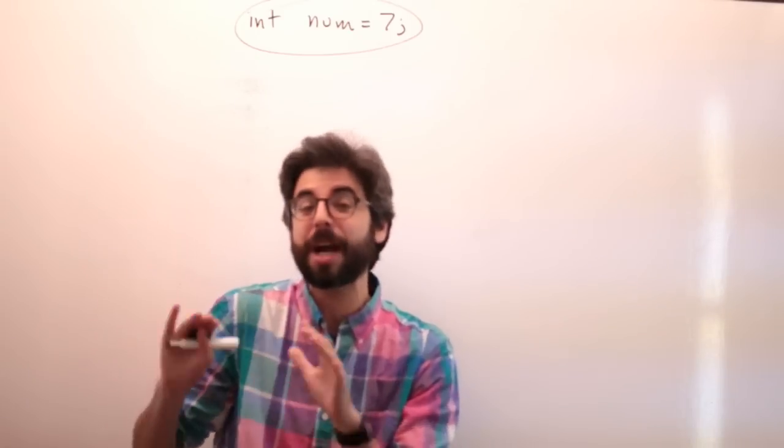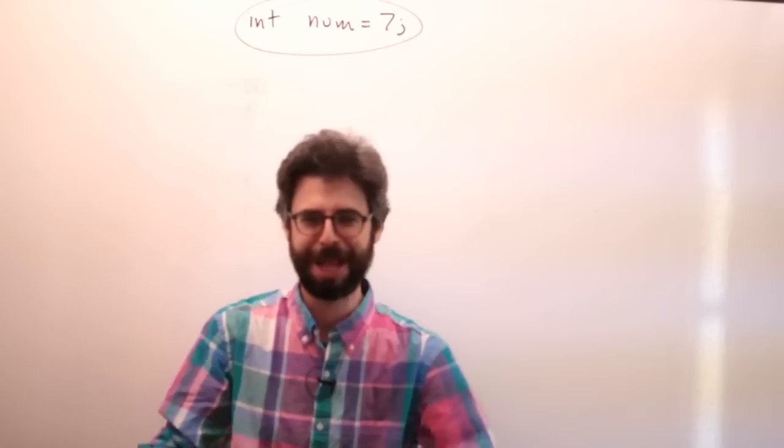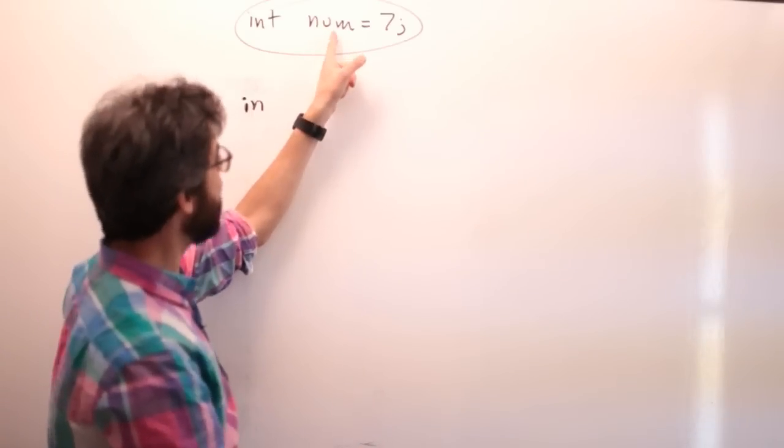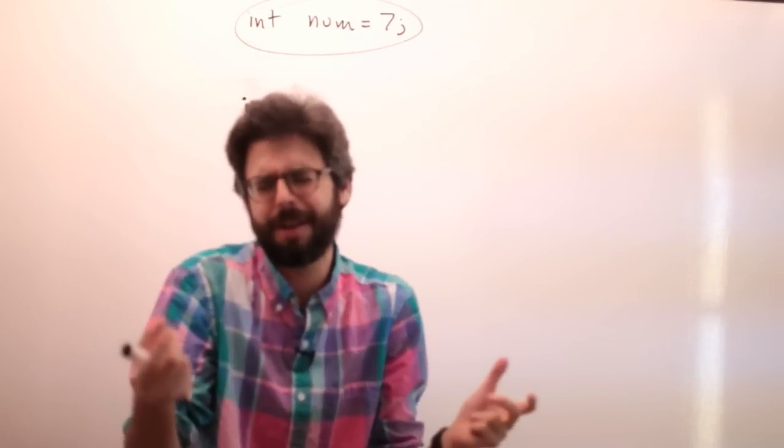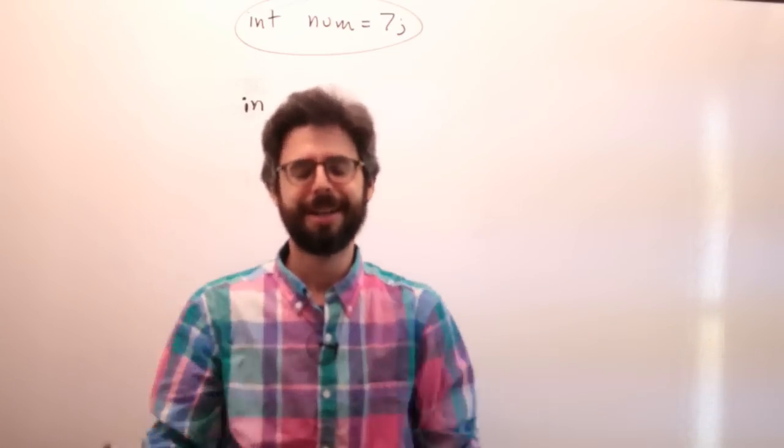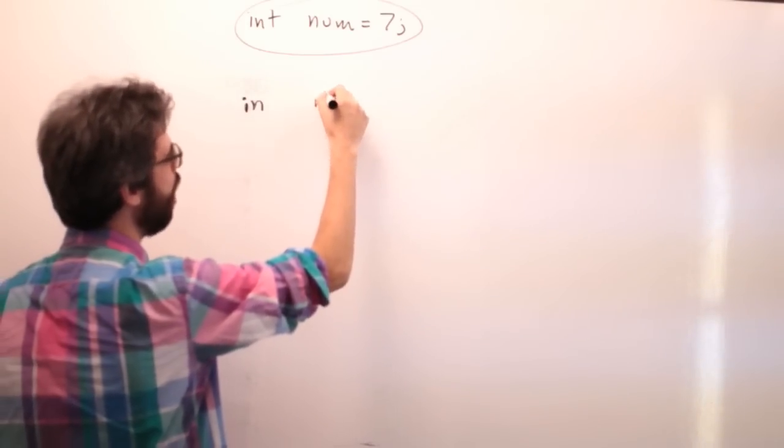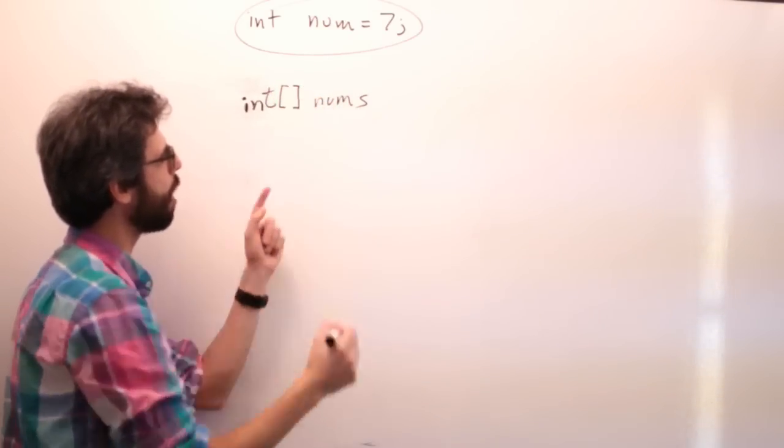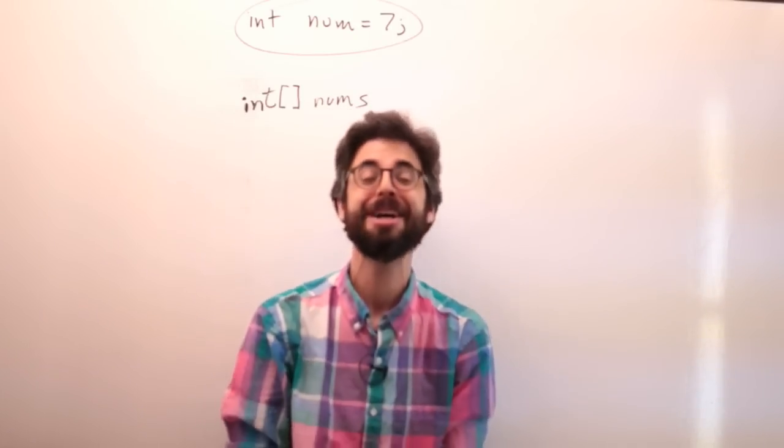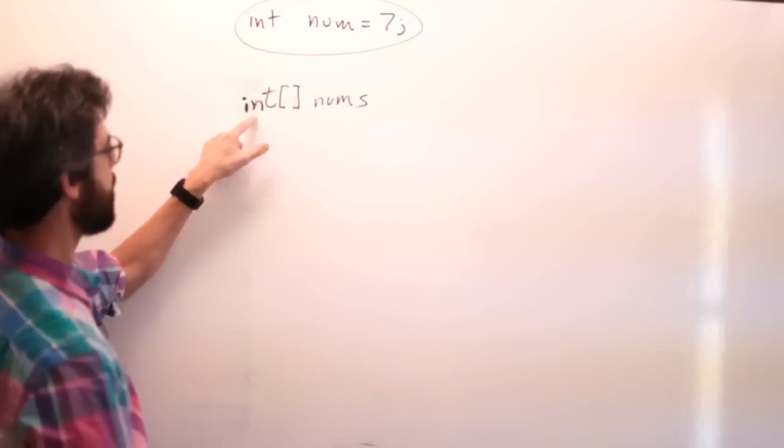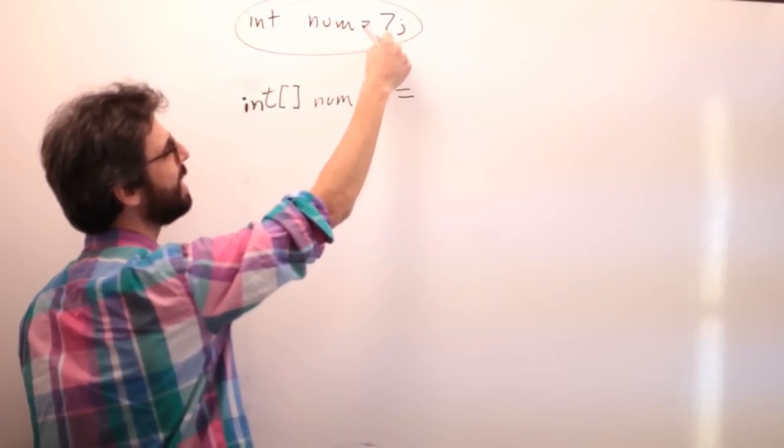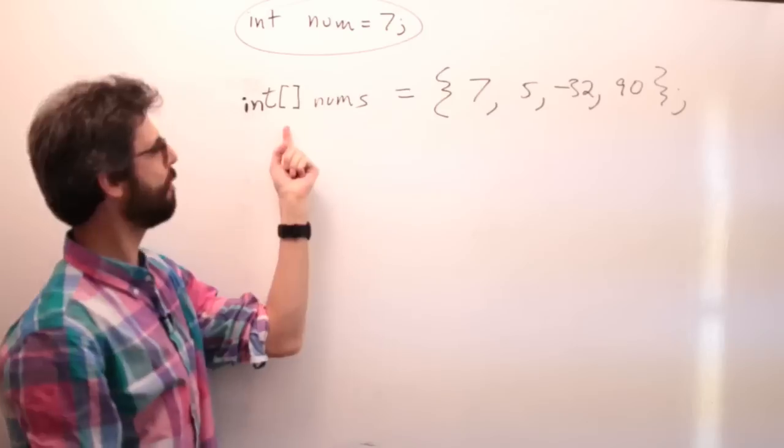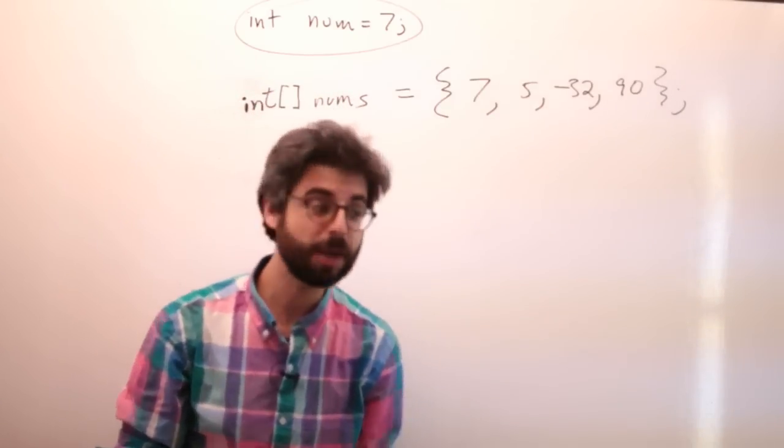I'm not going to talk about objects in this video, but arrays and objects is a particularly powerful thing. So how do you make this list? With a variable, you always need a name and a type. With an array, you also need to give it a name, nums, and a type, integer. But you add this extra bit of syntax, square brackets. Find the square brackets on your keyboard. Now I have an array of numbers, and I can initialize it with curly brackets: seven comma five comma negative 32 comma 90. So now I have an array of one, two, three, four values.